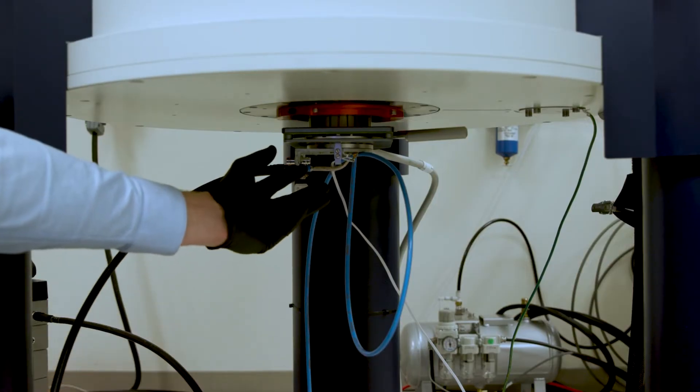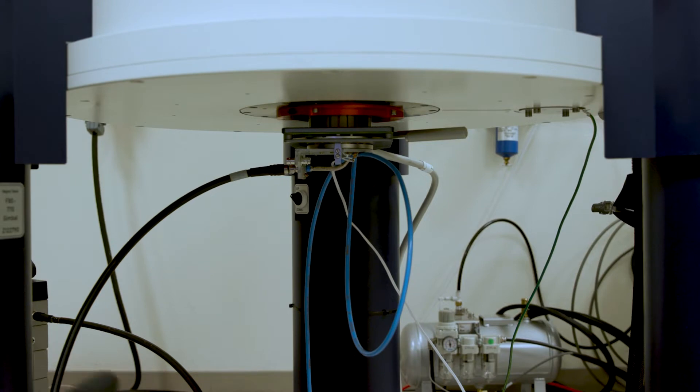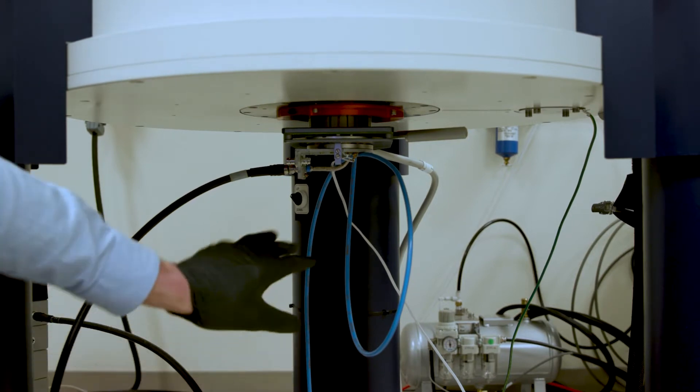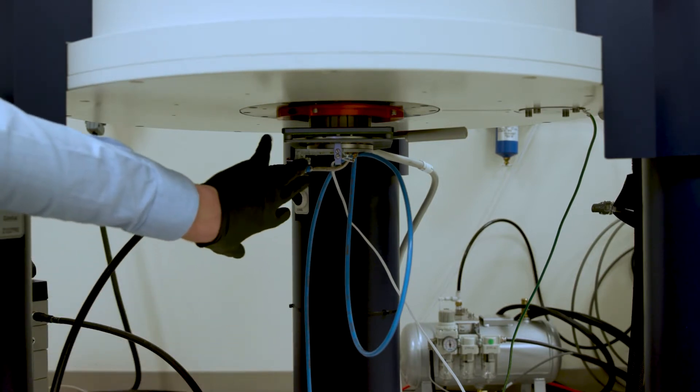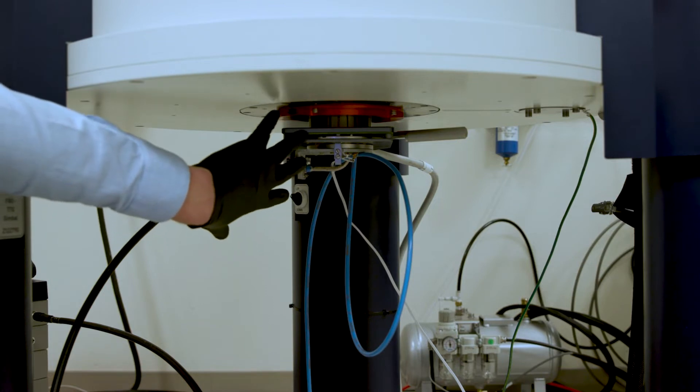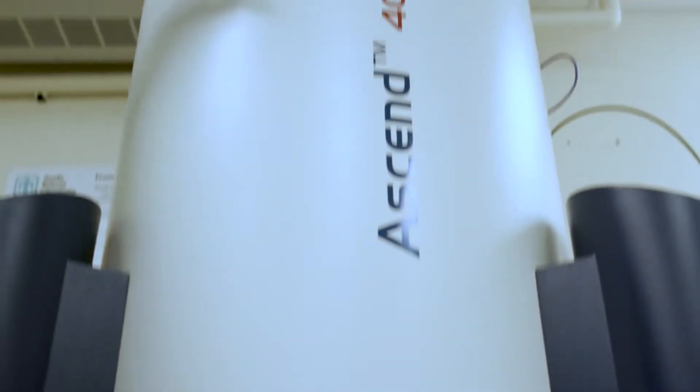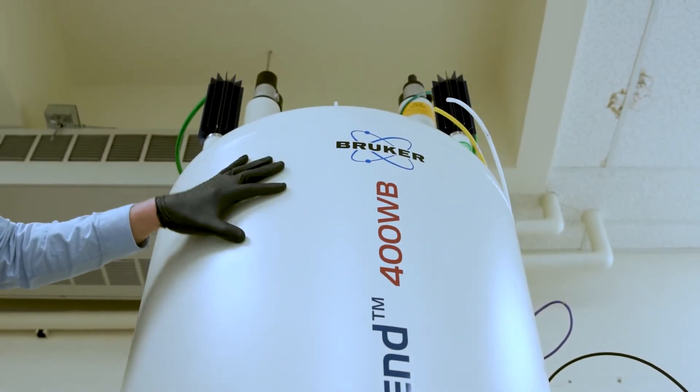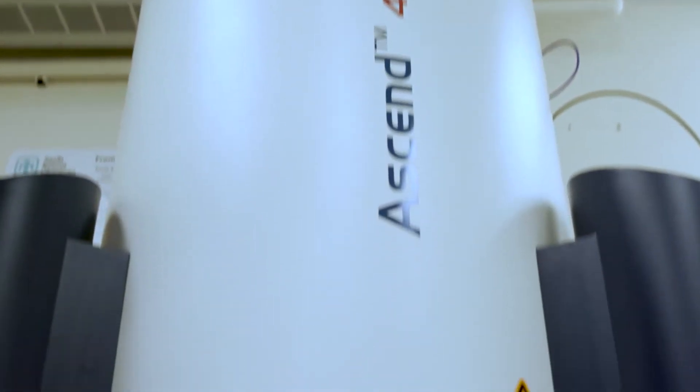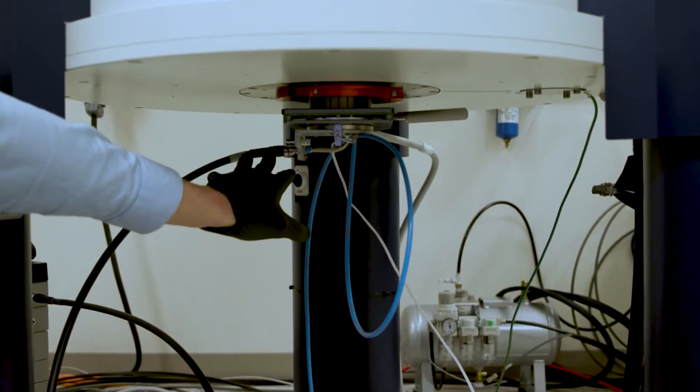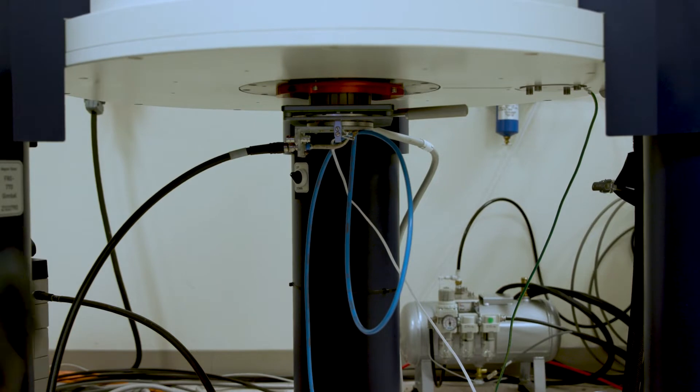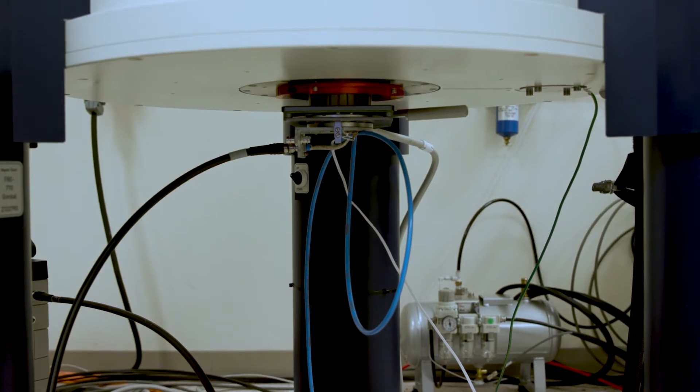So we have loaded a coin cell into the NMR probe and we are currently running an NMR experiment on the coin cell. The probe base is right here. The probe has been inserted into the bore of a very large superconducting magnet which provides the static magnetic field for the experiment. This black cable is a connection to the NMR spectrometer which provides the pulses that stimulate the nuclei in the coin cell, as well as record signals coming off of the coin cell for detection.